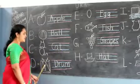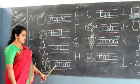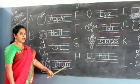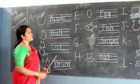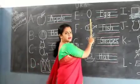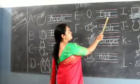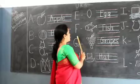D for Drum. D, R, U, M, Drum. E for Egg. E, G, G, Egg. F for Fish. F, I, S, H, Fish.